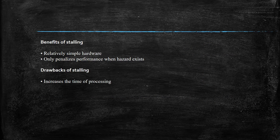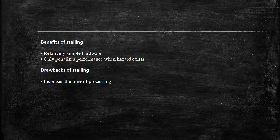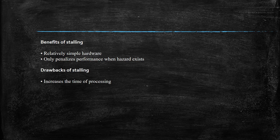We saw how to handle control hazard with stall in MIPS using MARS simulator. Stalling is a relatively simple hardware technique and it only penalizes performance when a hazard exists. The drawback of stalling is it increases the time of processing. However, in some conditions only stalling can be used to overcome these hazards rather than using the forwarding technique or adding hardware. So stalling is an important technique for some cases.